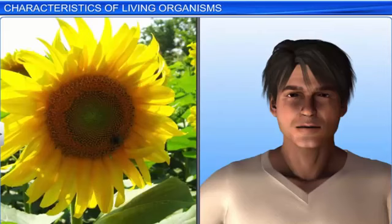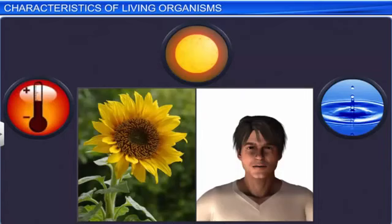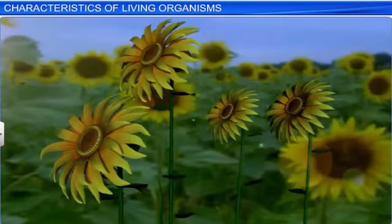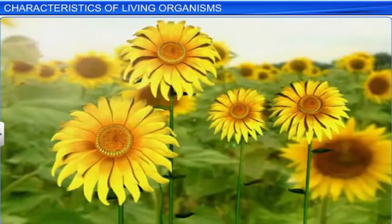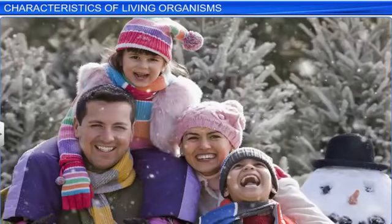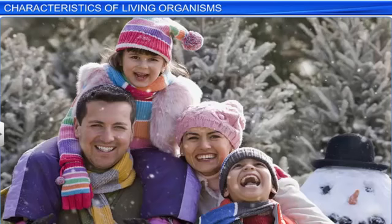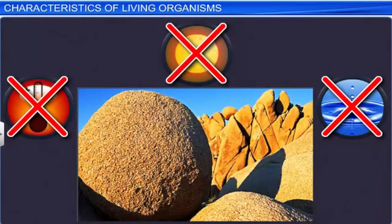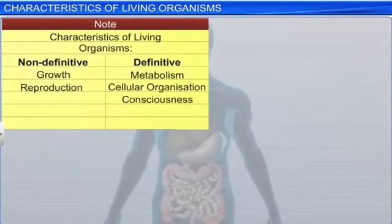Consciousness is another feature associated with living organisms. We know that all living organisms sense and respond to environmental stimuli such as light, water, and temperature. For instance, a sunflower always faces the sun. Humans too respond to environmental stimuli and are aware of their surroundings and themselves. For instance, in winters they wear woolens to keep their bodies warm. Non-living objects don't respond to external stimuli. Consciousness is therefore another definitive characteristic of a living being.